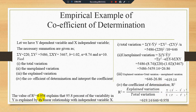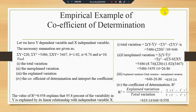The value of r-square = 0.958 means that 95.8% of the variability in Y is explained by the linear relationship with the independent variable. As the r-square value is higher, we are more satisfied with our estimated results. This is all about the coefficient of determination for simple regression. See you with another video. Ciao.